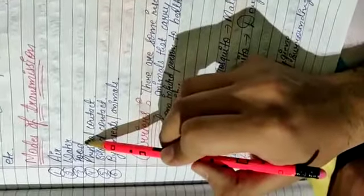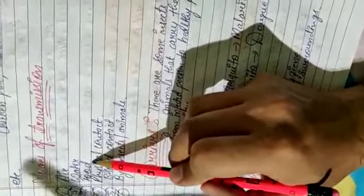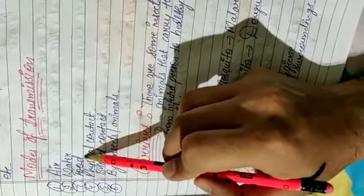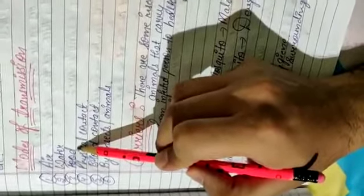we can get the disease through contaminated food. Contaminated means the food which is infected with microorganisms. If we eat food from outside which is at open places, we can get the infection.